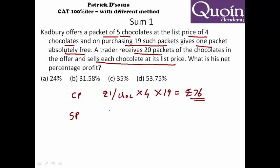Selling price: he sells each chocolate. The number of chocolates he has is five into twenty, which is hundred. So he sells at hundred rupees. You can do this calculation orally. The easiest way to do it.